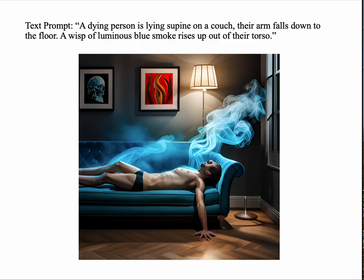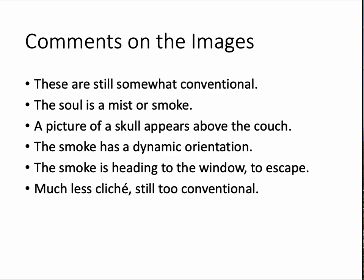A similar image — a dying person lying supine on a couch, same text. Again the smoke. We've got a skull, now a kind of red picture there. The lamp is a little bizarre — is it attached to the wall? Sometimes Stable Diffusion does odd things. Here the smoke or the ghost is headed towards the window — it's getting out of there, so we have some commentary. They're still somewhat conventional images. The soul is a mist or smoke, and a picture of a skull in both cases above the couch. The smoke is dynamic, it's energetic, it's moving towards the window or wall for escape. These blue smoke images are less cliché, but they still seem too conventional to me.